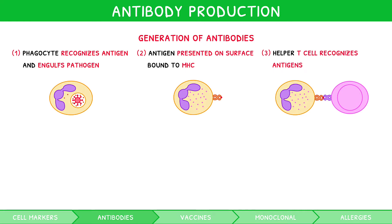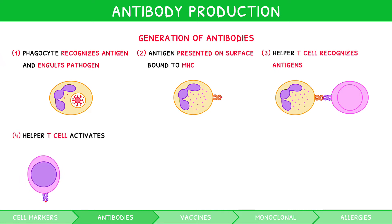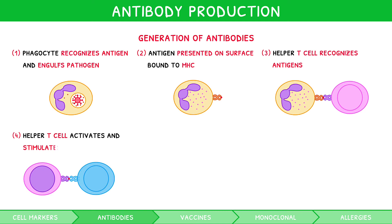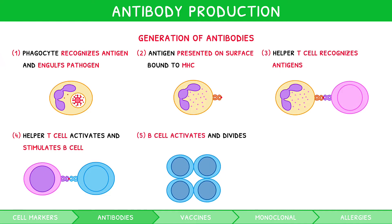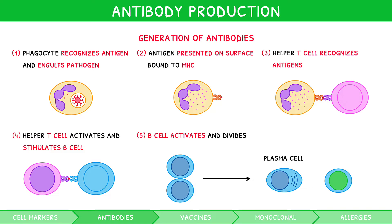By binding, the helper T cell becomes activated, and in turn stimulates another white blood cell known as a B cell, which is therefore specific to the initial antigen. By binding, the B cell becomes activated, and can now divide to form either a clone of itself known as a plasma cell, or a memory cell.